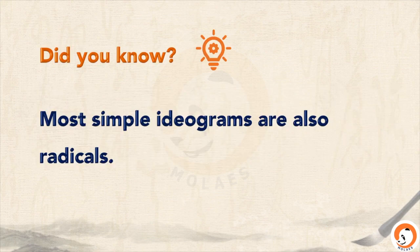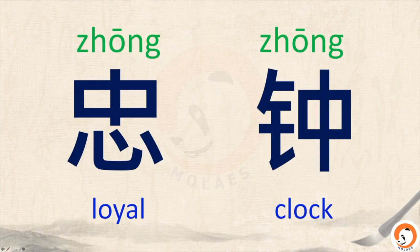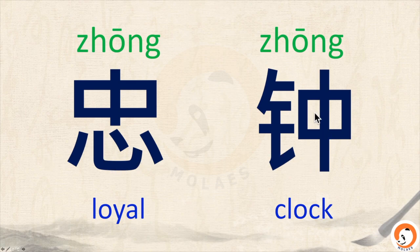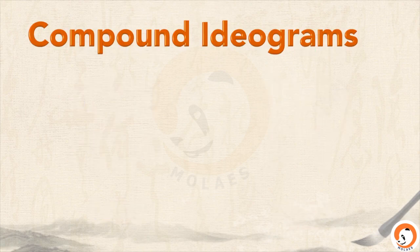Did you know that most simple ideograms are also radicals? For example, we can find 中 in both these two characters. Here we have 中 — middle — on the top, and heart at the bottom. And in this other character, 中 is on the right side. They all pronounce 中. This one means loyal, and this one means clock.